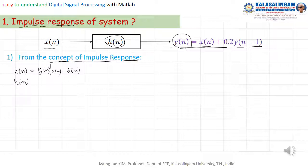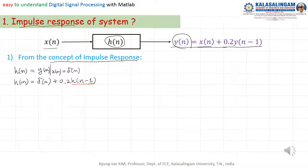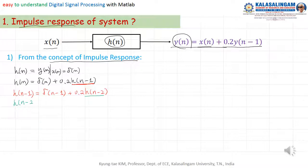Therefore, h of n equals delta of n plus 0.2 h(n minus 1). And here, h(n minus 1) is also delta(n minus 1) plus 0.2 h(n minus 2). Also, h(n minus 2) means delta(n minus 2) plus 0.2 h(n minus 3), like that. Then this goes to infinity.